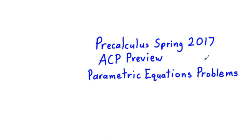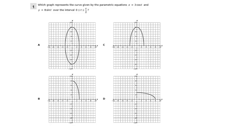This is the Pre-Calculus Spring 2017 ACP Preview Parametric Equation Problems, and there are going to be six of them here. This first one I want to look at is which graph represents the curve given by the parametric equation x equals 3 cosine t and y equals 8 sine t over the interval from 0 to pi over 2.